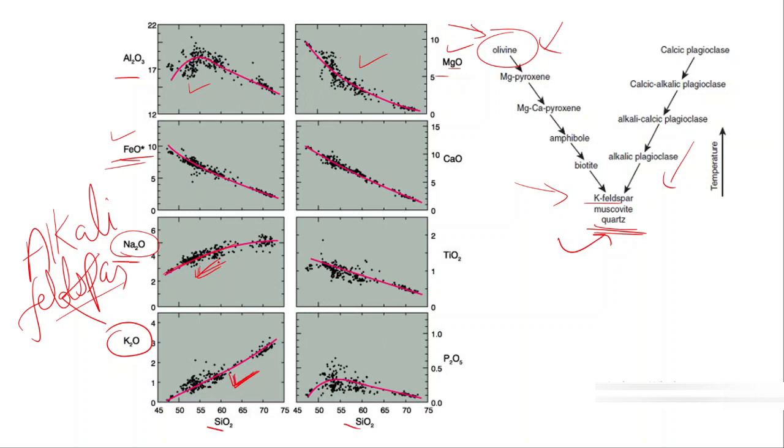One more trend showing an interestingly decreasing trend is calcium oxide. Now there is confusion, because this calcium oxide might be present in pyroxene, which is an important constituent, and also in calcium plagioclase.